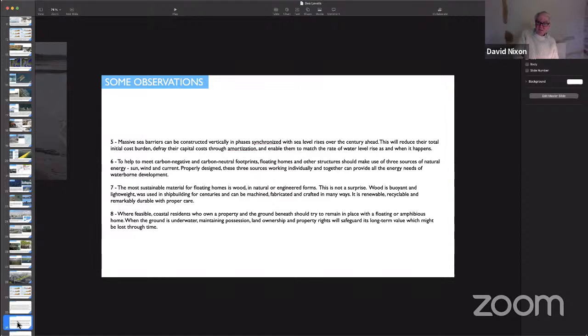Item six: to help meet carbon negative and carbon neutral footprints, floating homes and other structures can make use of three sources of natural energy at the same time - sun, wind and current. Uniquely properties by the sea, structures by the sea are well exposed to sun, wind and current in all clouds. So why not use these to provide the local power instead of the difficulty of bringing in publicly provided power from a source on land?